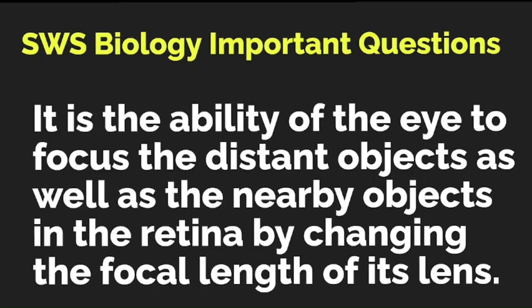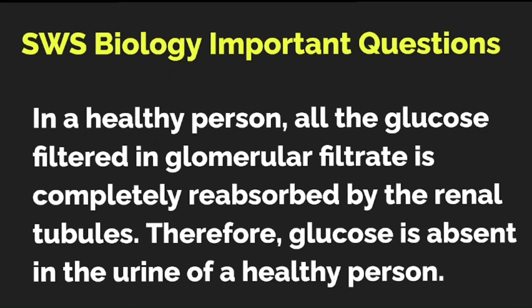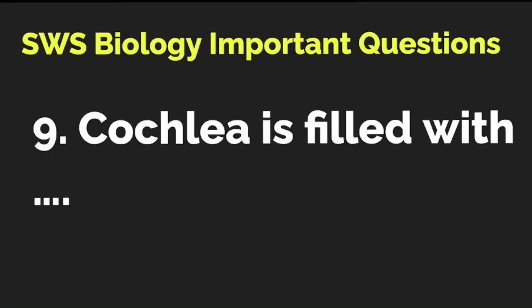Glucose is absent in the urine of a healthy person — why? In a healthy person, all the glucose filtered in the glomerular filtrate is completely reabsorbed by the renal tubules. Therefore, glucose is absent in the urine of a healthy person. I'm sure all of you knew this.